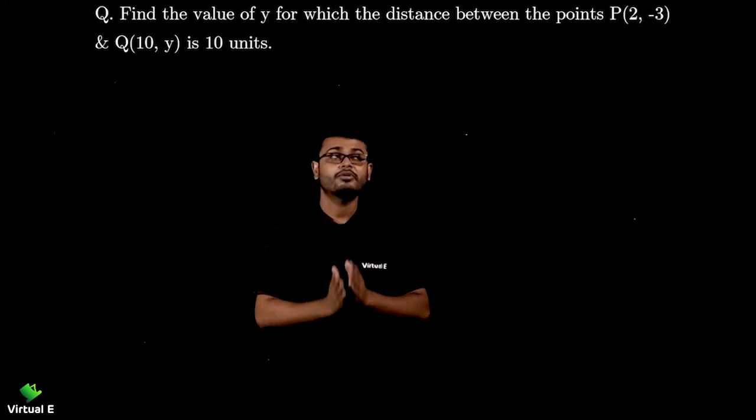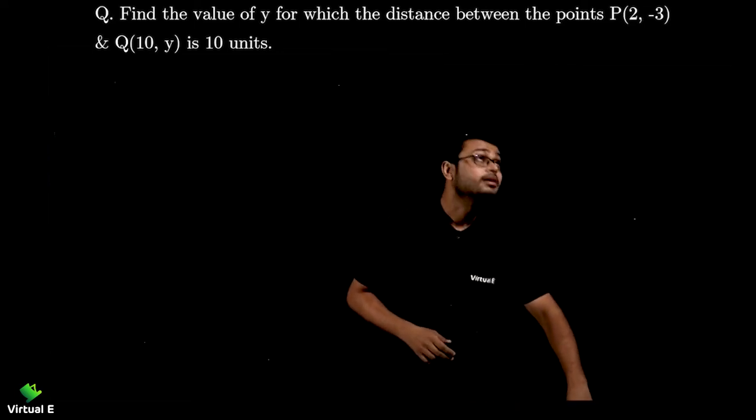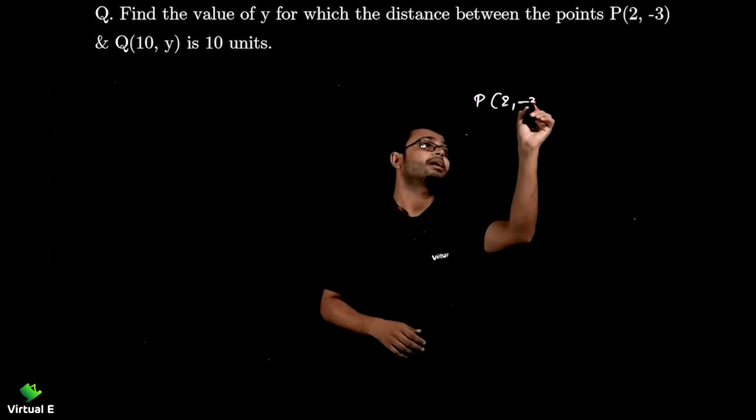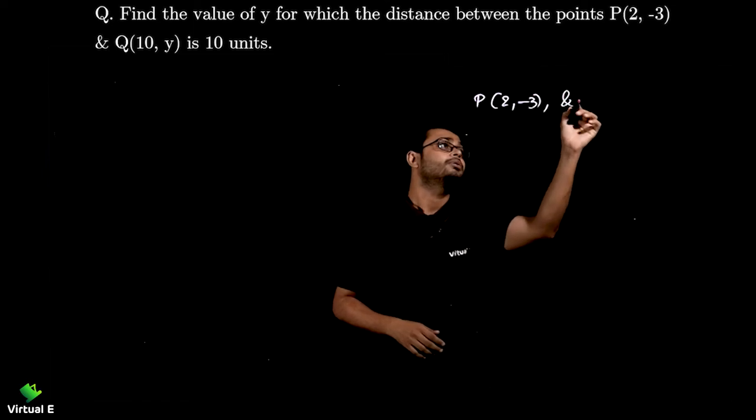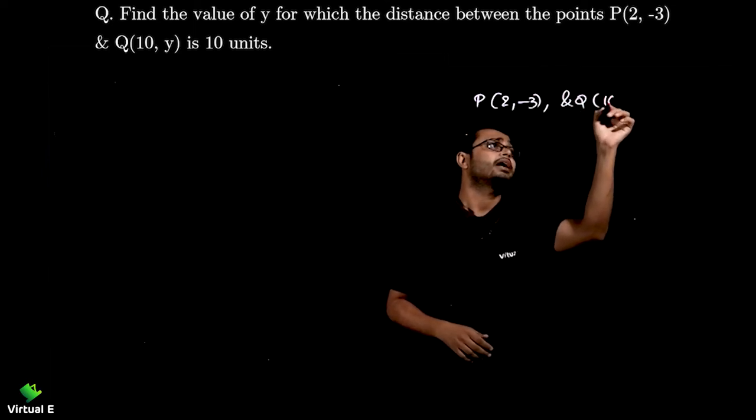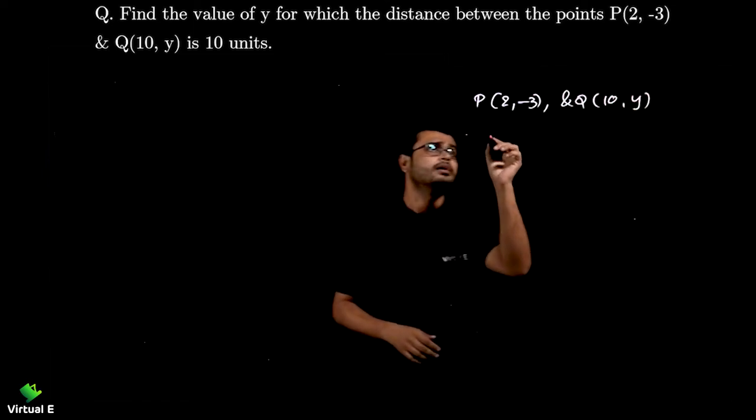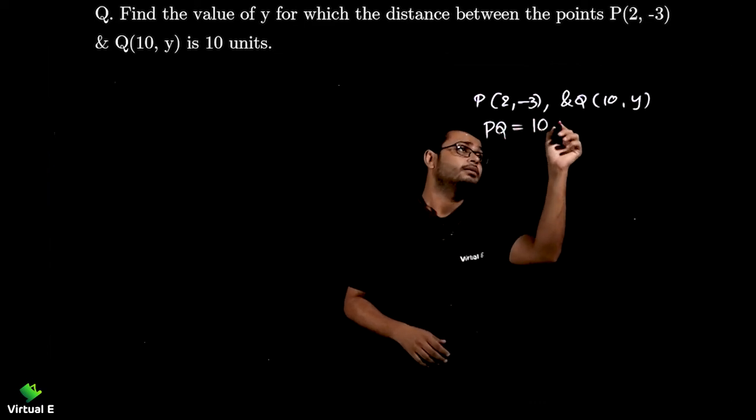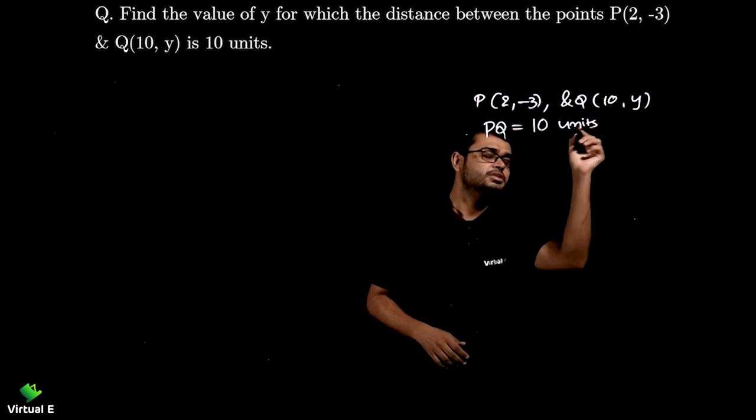So let's start. We know the distance formula. We are going to use that one. Let's start. So I have P as (2, -3) and Q as (10, y) and what's the distance? PQ is equal to 10 units. Simple.